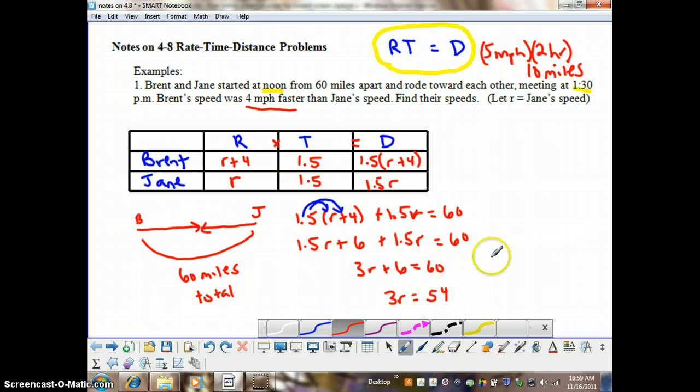And then if we divide both sides by 3, we get r equals 18. And we want to make sure we put units on this. It's miles per hour here, so 18 miles per hour. So, maybe they were riding on bikes and not in cars. And we want to always make sure we answer the question that was asked. It says, find their speeds.